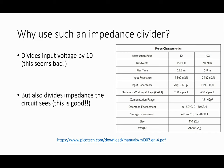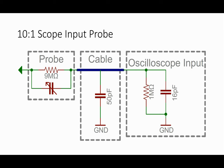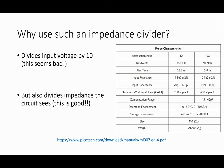Here's a probe that's switchable — a lot are not switchable, they're just 10 times because 10 times is so much better in general. I have one here that I can switch between 1x mode — which basically shorts out that resistor and capacitor, making it like a piece of wire — and 10x mode, which has this divider. In 10x mode, the capacitance that the circuit sees is only 14 picofarads. Rather than seeing the 70 to 120 picofarad load, all you see is 14 to 18 picofarads.